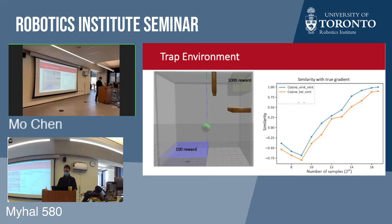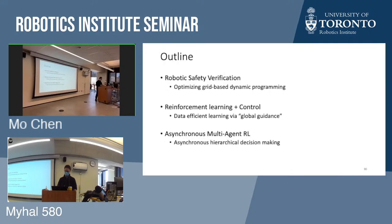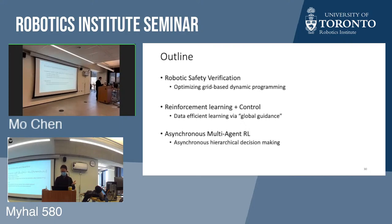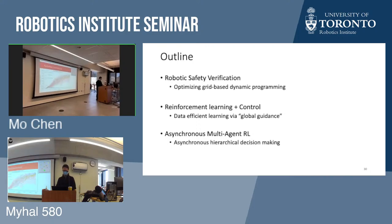We also analyzed gradient estimate accuracy. In this particular example, using the control-based baseline gives a better estimate of the gradient compared to using the RL value function as baseline — though this result may not generalize to every case. In summary: using control as global guidance for RL works well because it explores the low-dimensional problem space thoroughly, providing guidance everywhere in the state space even before RL begins training.